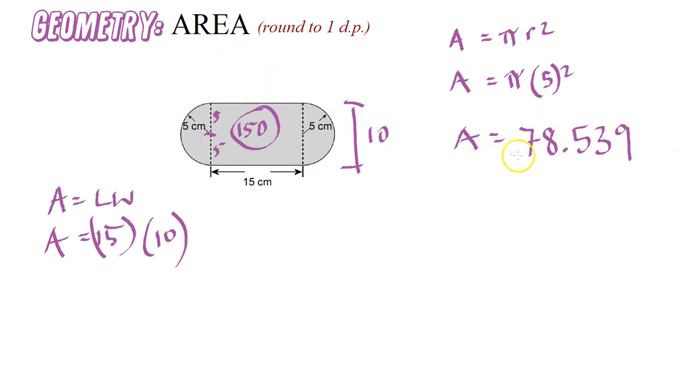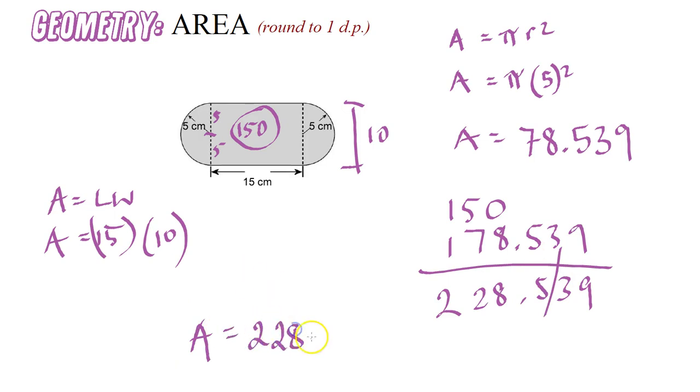So we add 78.539 to 150—that's the circle plus the original rectangle. Adding them up gives us 228.539. Rounding to one decimal place, the area of this compound shape is 228.5 centimeters squared.